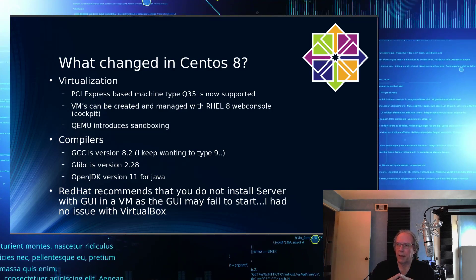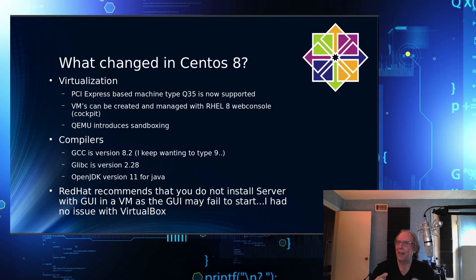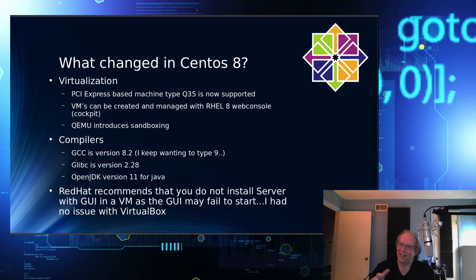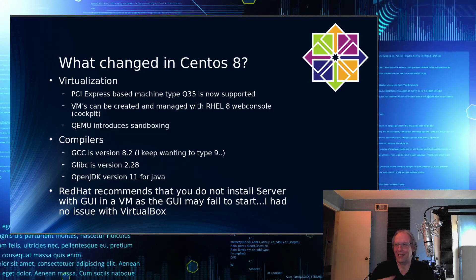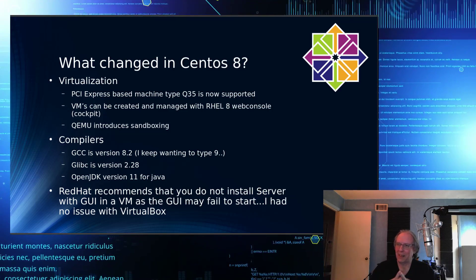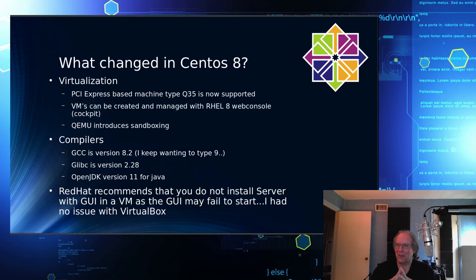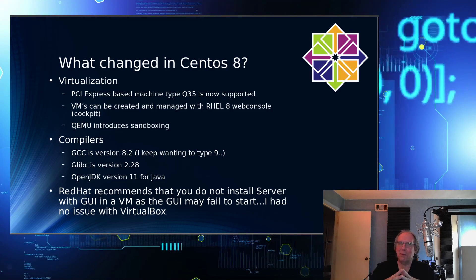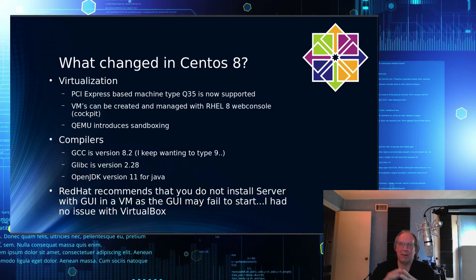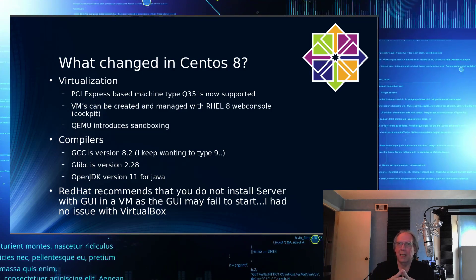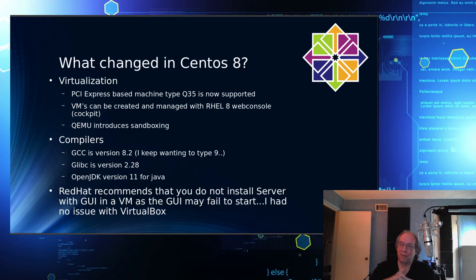On compilers, GCC is version 8.2 — not 9, just 8.2, which is fine. glibc is 2.28 and OpenJDK version 11 for Java, which is one release behind Oracle, which was at version 12 at the time of this video.